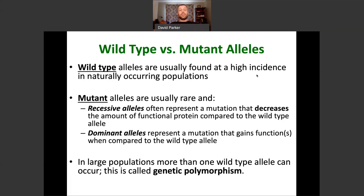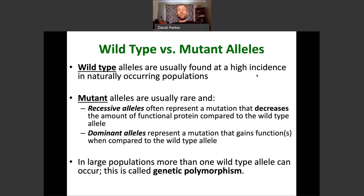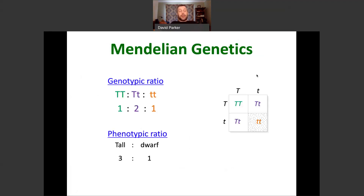In large populations such as the human population, you can have more than one type of wild type allele. Hair color is a good example — it's relatively complicated genetically, but there are many alleles, none of which have a particular positive or negative connotation on the organism. Red hair, brown hair, blonde hair — those are all totally normal phenotypes. That's an example of genetic polymorphism. This recaps what we were thinking about in the previous part of the class on Mendelian genetics.